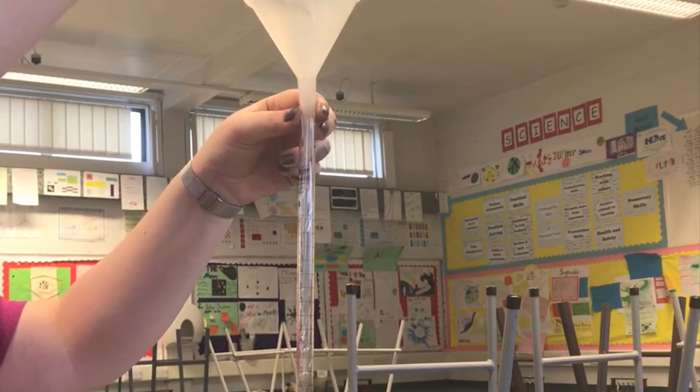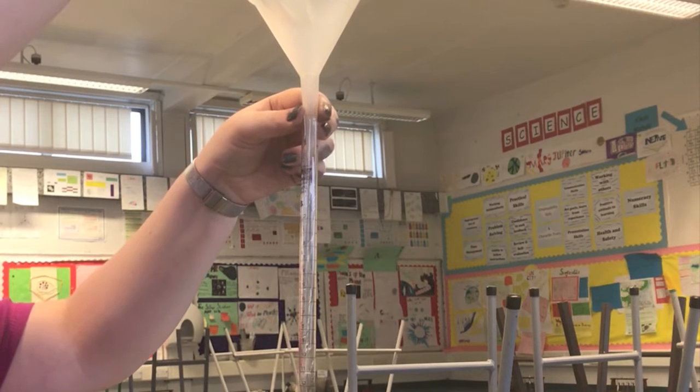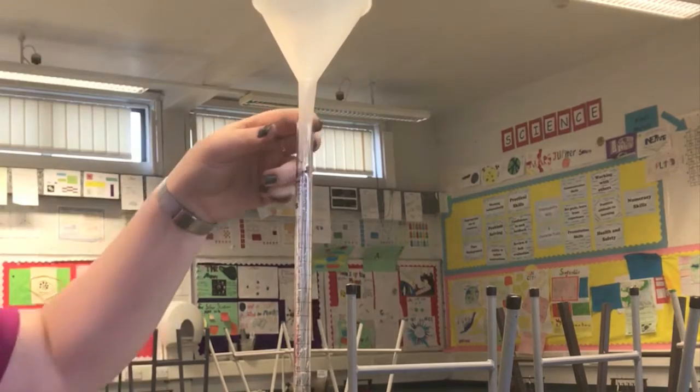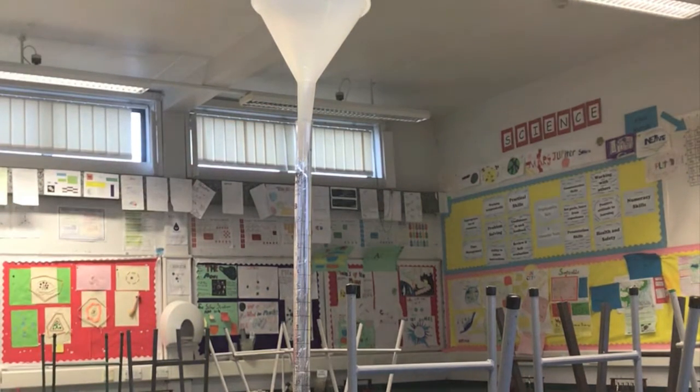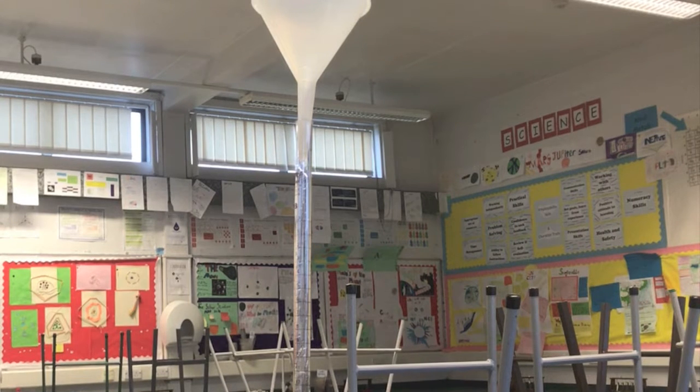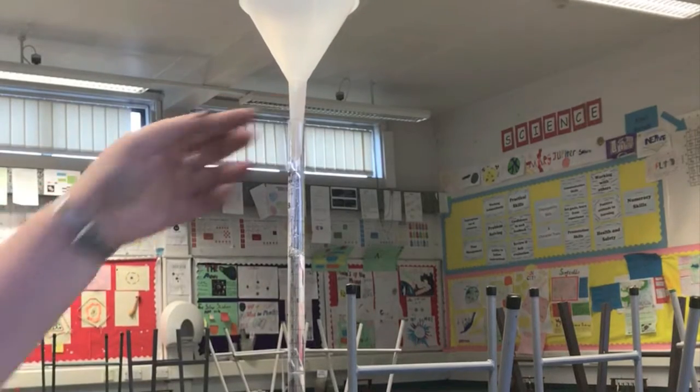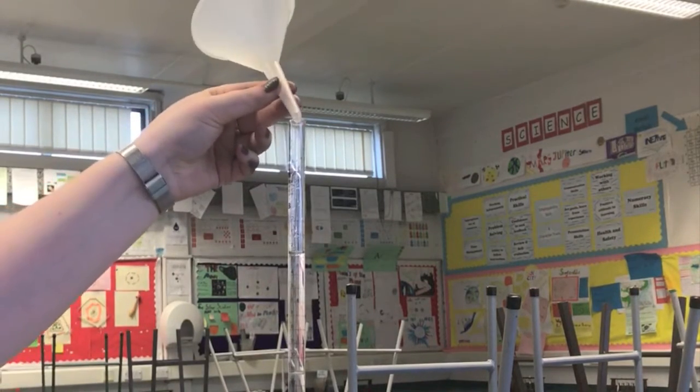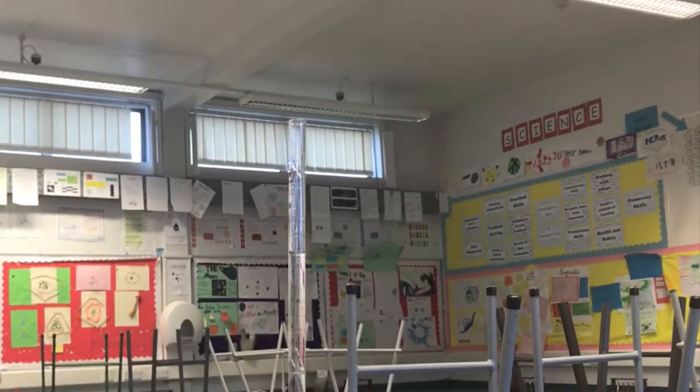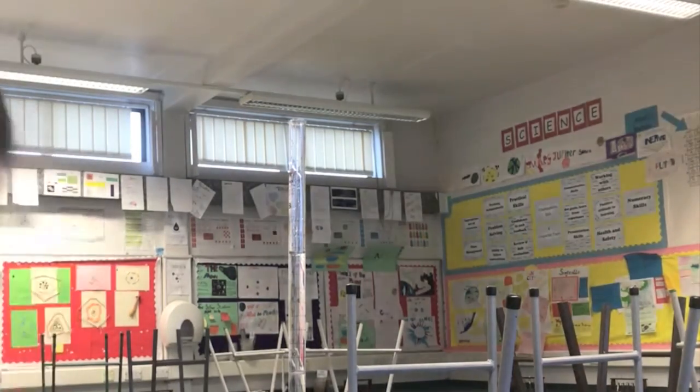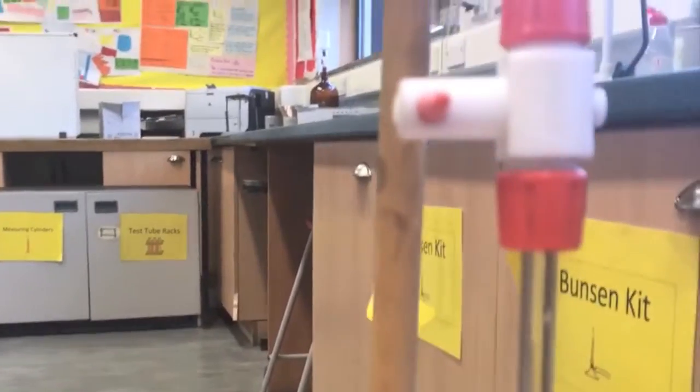The burette is filled with one of the two solutions. The funnel needs to be removed before the titration starts. If it was not removed then drops may enter the burette and change the reading. The tap is opened to ensure that the tip is also filled as this is part of the reading of the burette.